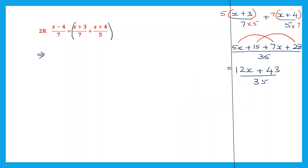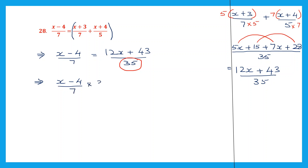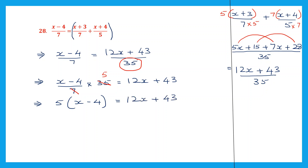So on the left hand side we have x minus 4 by 7, and on the right hand side we have 12x plus 43 by 35. So let's transpose 35 to the left hand side. Here it is division; when it moves it becomes multiplication. So this will be x minus 4 by 7 into 35, equal to 12x plus 43. Now here we can cancel 7 and 35: 7 5s are 35, so I need to multiply 5 into x minus 4. So 5 into x minus 4 on the left hand side is equal to 12x plus 43. So 5 into x is 5x, minus 5 4s are 20, equals 12x plus 43.